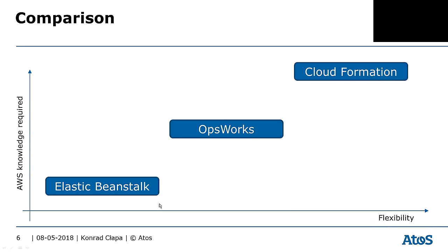What I'm trying to show is that those technologies require different levels of knowledge when it comes to AWS and offer different flexibility, and they're directed at different audiences. Elastic Beanstalk is the easiest one to use — it's constructed for developers. It's a PaaS solution; you don't need a lot of knowledge about AWS infrastructure and you can deploy your application quite easily.